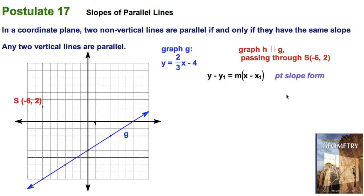The point-slope form of a line looks like this: y minus y1 equals the slope times the quantity x minus x1. We're going to replace x1, y1 with the given point S. x1 is negative 6, y1 is 2. What about M? It's got to be the same slope, the two-thirds. So I'm going to make my substitution.